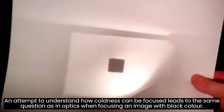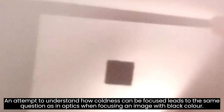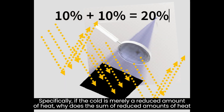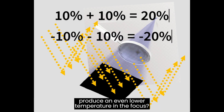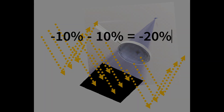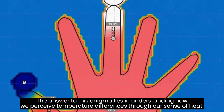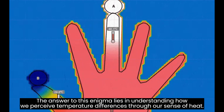An attempt to understand how coldness can be focused leads to the same question as in optics when focusing an image with black color. Specifically, if cold is merely a reduced amount of heat, why does the sum of reduced amounts of heat produce an even lower temperature in the focus? The answer to this enigma lies in understanding how we perceive temperature differences through our sense of heat.